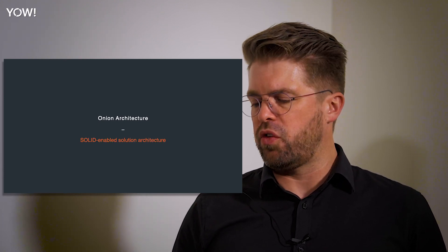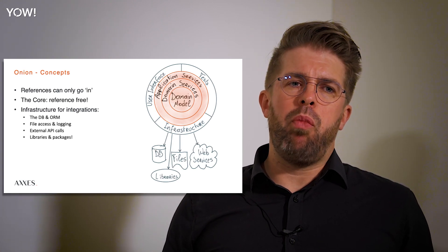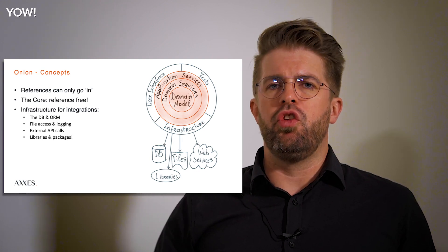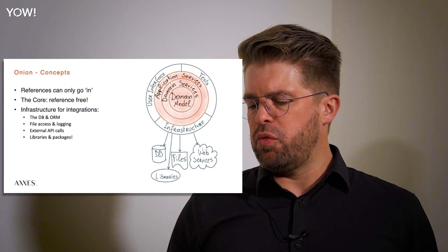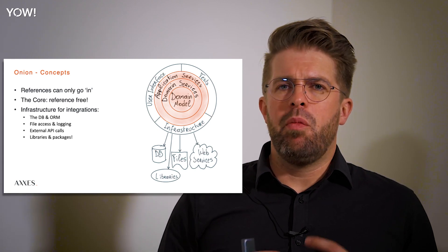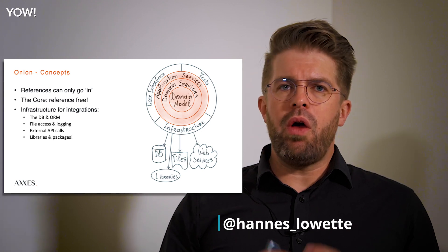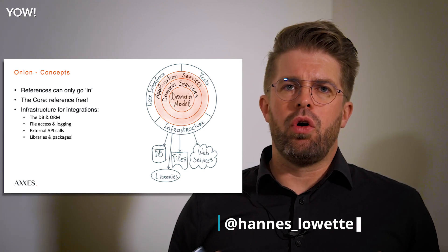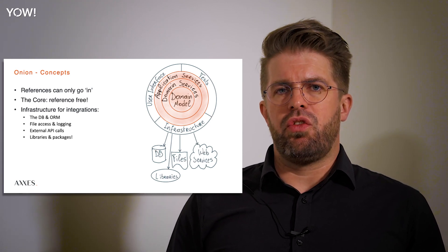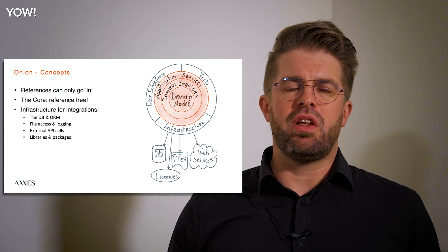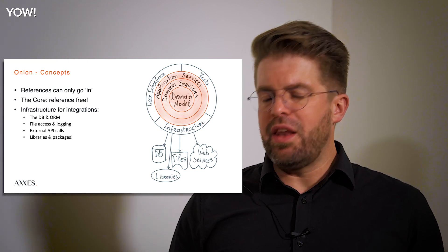What onion architecture looks like: you only point references in. If you build your domain model, that should be free of any references, maybe with a few exceptions for the time library, stuff like that, but it should be very clean of any abstractions whatsoever. Around that you will build your domain services which is your application logic, and around that you will build your application services. The application services are basically what the rest of your application will consume from your core.